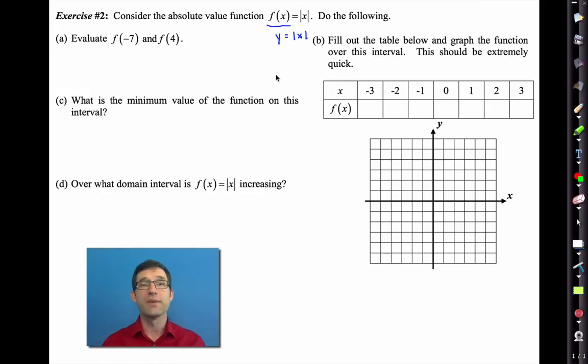So the simplest absolute value function is literally y equals the absolute value of x. So don't let the f of x scare you. Don't let that happen. This is just y equals the absolute value of x. Letter a. This should be simple enough. Why don't you go ahead and do it. Remind you of what function notation means.